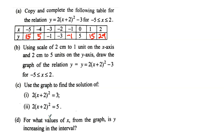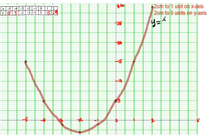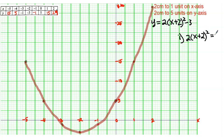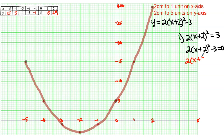Now we move on to answering the questions. They want us to use the graph to find the solution of two equations. The graph we plotted is y = 2(x + 2)² - 3. For part i, we are solving 2(x + 2)² = 3. Bring the 3 inside: 2(x + 2)² - 3 = 0. Comparing with our graph equation, y = 0.